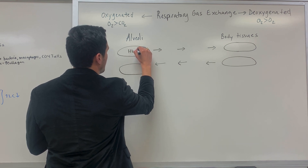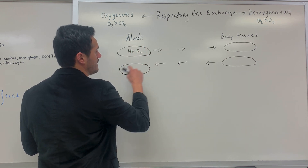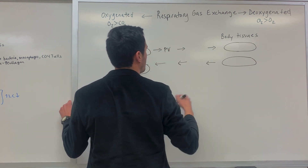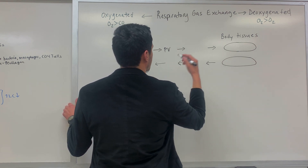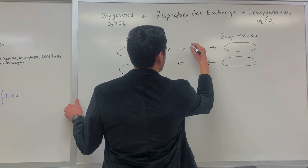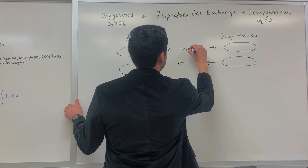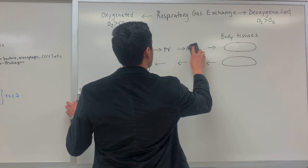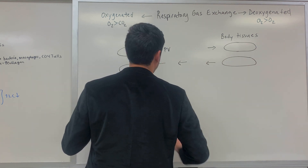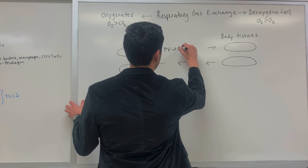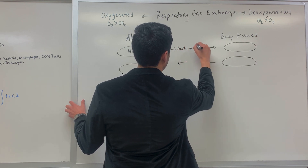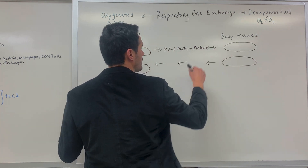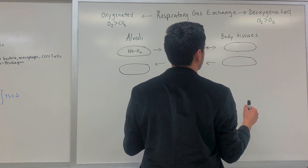Hemoglobin will bind to oxygen, and then it'll get into the pulmonary vein because we're going back to the heart. From there it'll eventually lead to the aorta, and from the aorta it'll travel through the arteries until it eventually leads to the body tissues.